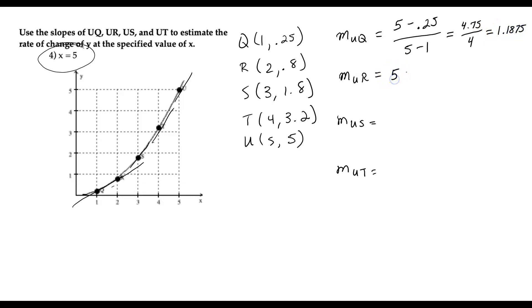UR is going to be 5 minus 0.8 divided by 5 minus 2, which is 4.2 divided by 3, which is 1.4. US is going to be 5 minus 1.8 divided by 5 minus 3, so that's 3.2 divided by 2, which is 1.6. And then UT is 5 minus 3.2 divided by 5 minus 4. We end up with something like 1.8 divided by 1, which is 1.8.